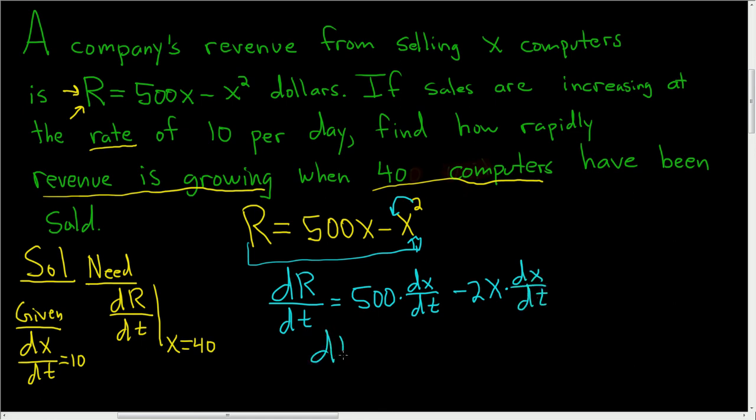Now let's go ahead and plug in dX/dt. So dR/dt is equal to 500, and dX/dt here is 10. So we have minus 2X, and then again another 10 here.